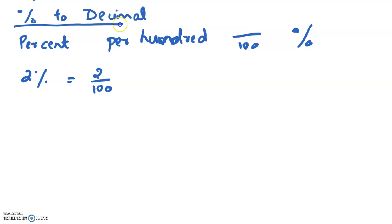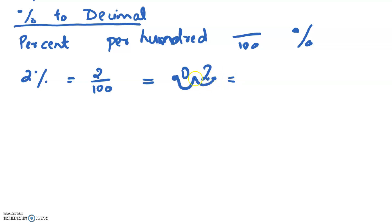Percentage means 'per 100'. So 2% is 2 by 100. We have a fraction. If we are converting, we add 2 zeros and place a decimal point. Moving two places, we get 0.02. So 2 percent as a decimal is 0.02.